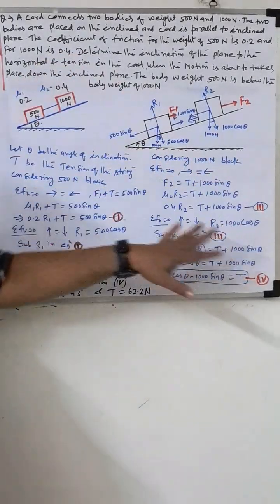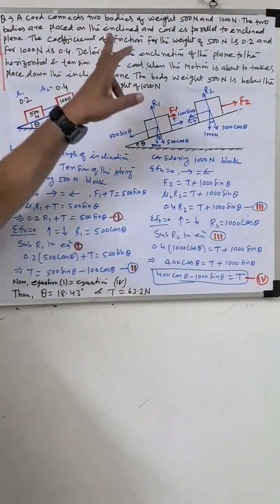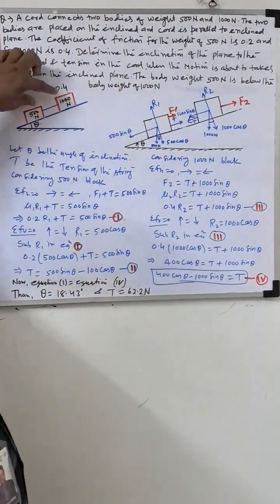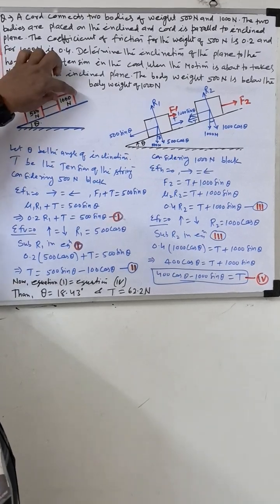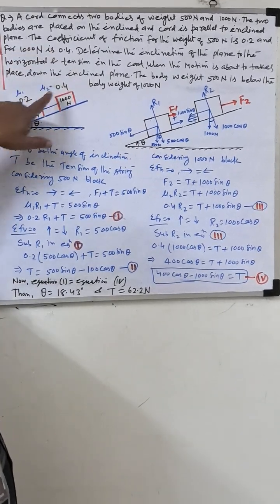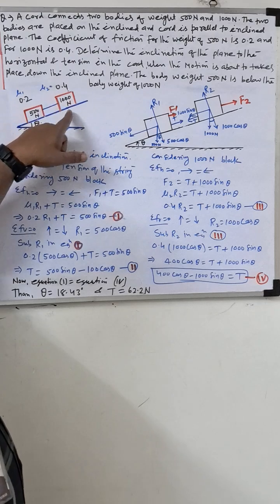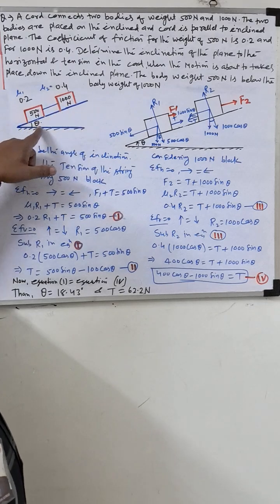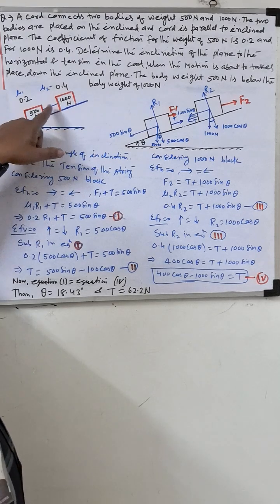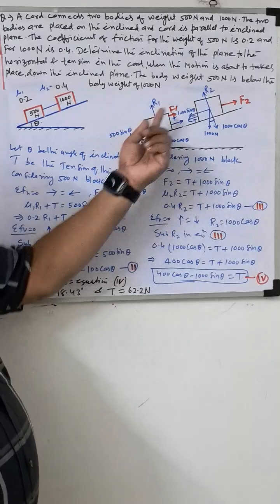This friction problem involves one rope connecting two bodies: one 500 newton block and one 1000 newton block. Both coefficients of friction are given, and the 500 newton block is below the 1000 newton block. We are asked to find the inclination angle and the tension in the rope. From the given diagram, we draw the free body diagram.